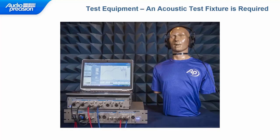One of the key equipment items needed for testing headphones and earphones is an acoustic test fixture. The one shown here on the right is a special mannequin called a head and torso simulator, or HATS. It's equipped with ear simulators — small couplers inside the mannequin's head that serve two functions: they simulate the acoustic impedance of a typical human ear to acoustically load the earphones, and each one has a built-in measurement microphone at the location of the eardrum, called the drum reference point, or DRP.